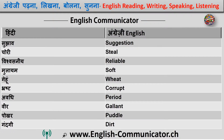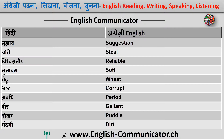Chori. 22. Steel. 23. Visrasania. 23. Reliable. 24. Mulayam. 24. Soft. 25. Gehu. 22. Wheat. 23. Brust. 24. Corrupt. 25.